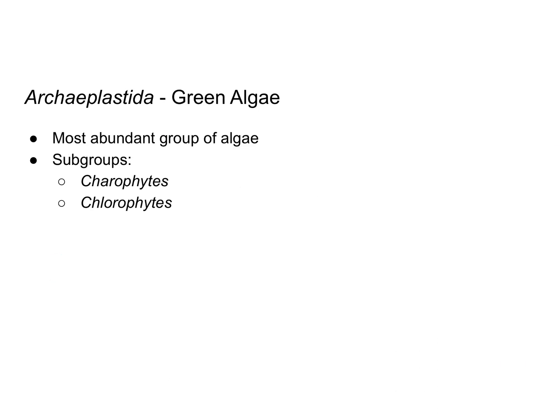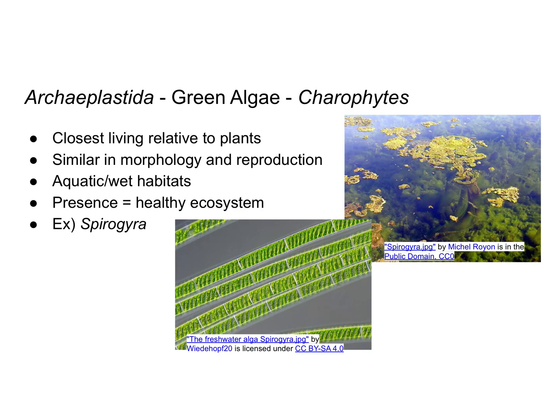The green algae are the most abundant group of algae and are also classified in the supergroup Archaeplastida. There are two subtypes of green algae: the charophytes and the chlorophytes. The charophytes are actually the closest living relative to plants, and they are similar in morphology and reproduction to plants, which is one reason they are classified that way.